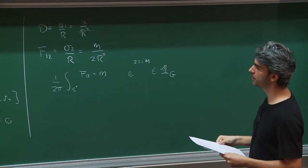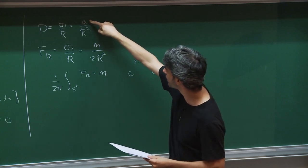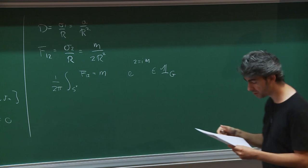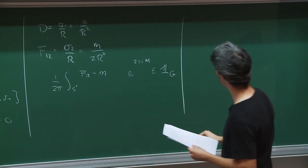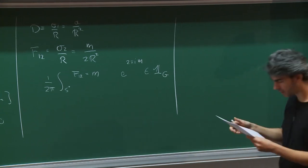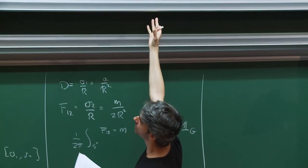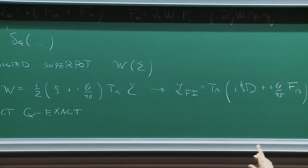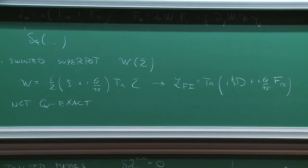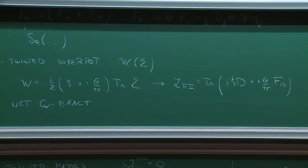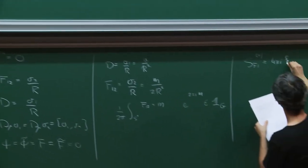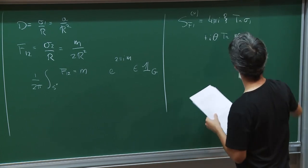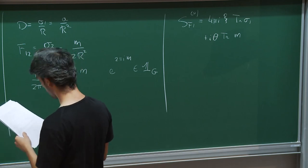This is our space of BPS configurations. Our path integral reduces essentially to an integral over A, which is real, and the sum over this lattice of magnetic charges. Then we have to compute the classical action and the one-loop determinant. The classical action is very simple: the only term which is not Q-exact is the twisted superpotential, so essentially we evaluate this very simple action on these configurations and get something very simple.